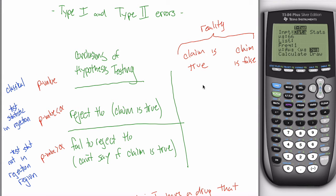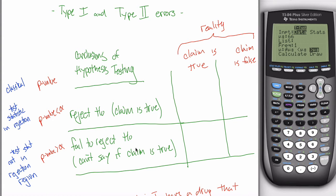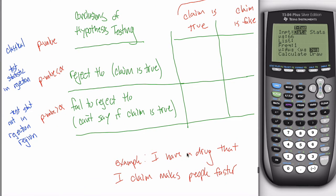So there are four different possibilities. If the claim really is true and you do hypothesis testing and reject the null hypothesis — that's good news. As the statistician, you're hoping to reject the null and say the claim is true because we know the claim really is true. If the claim is really false and you fail to reject the null hypothesis — best case scenario — that's also good, because we never say the claim is false; we just can't say it's true.